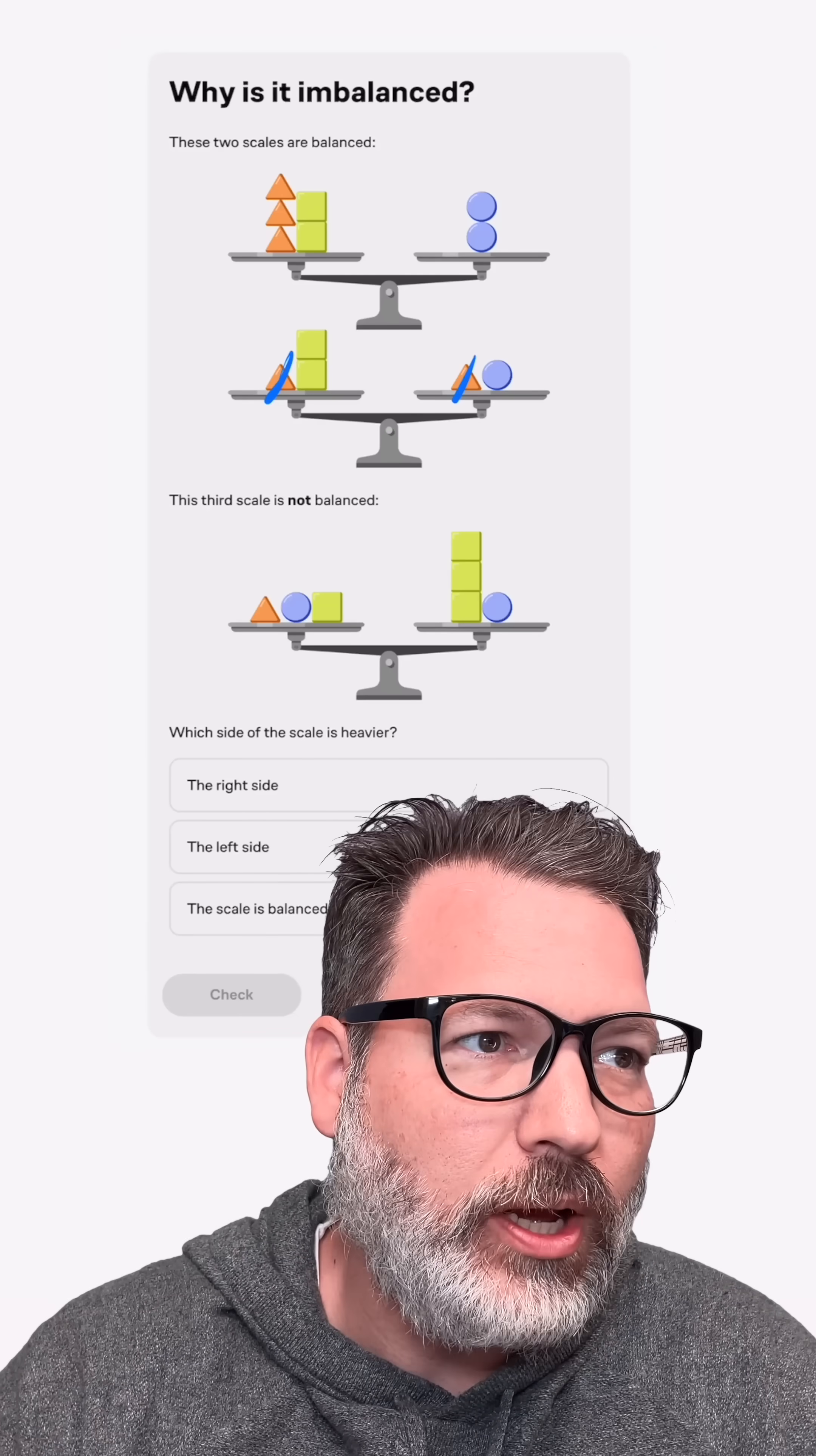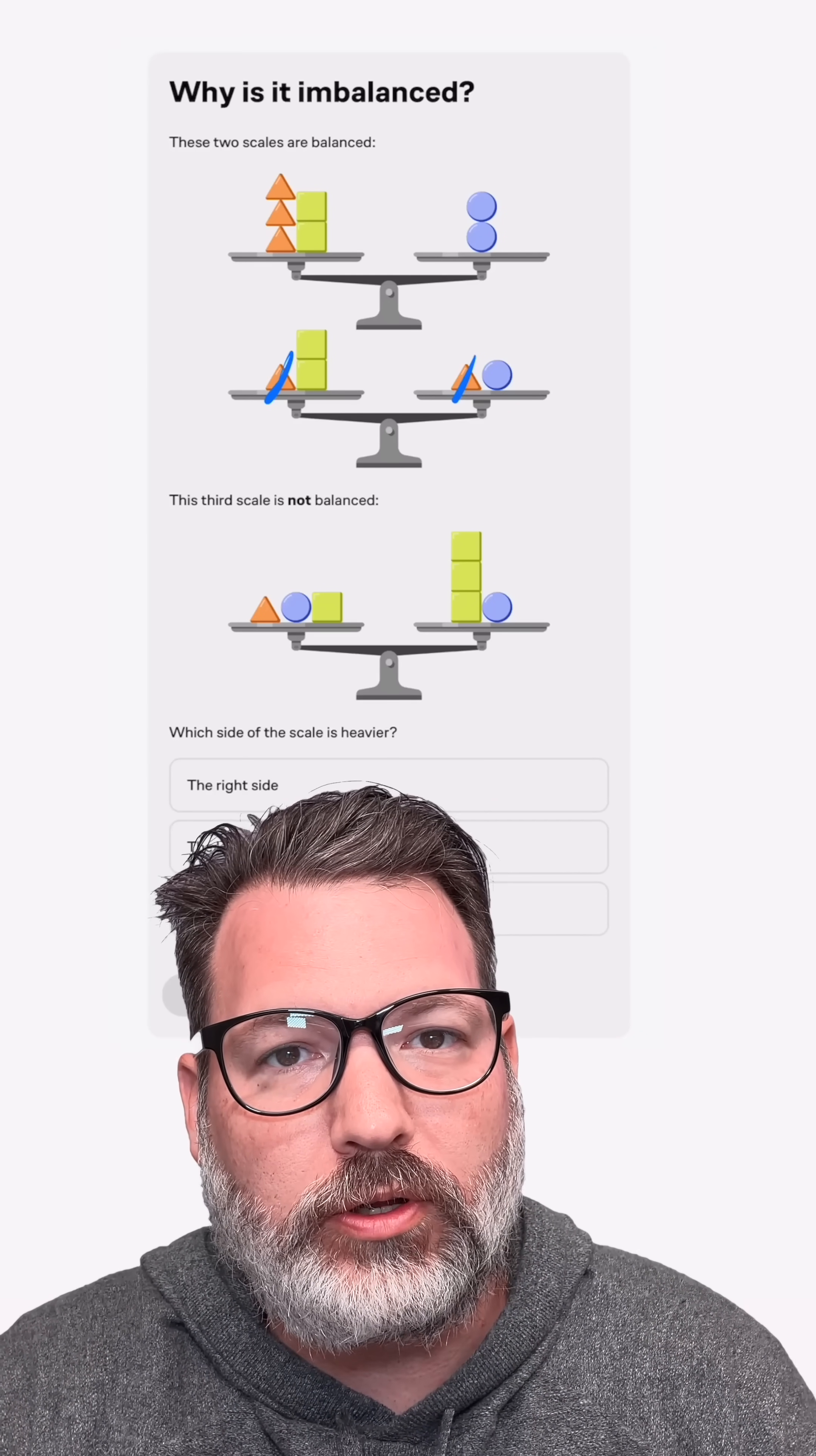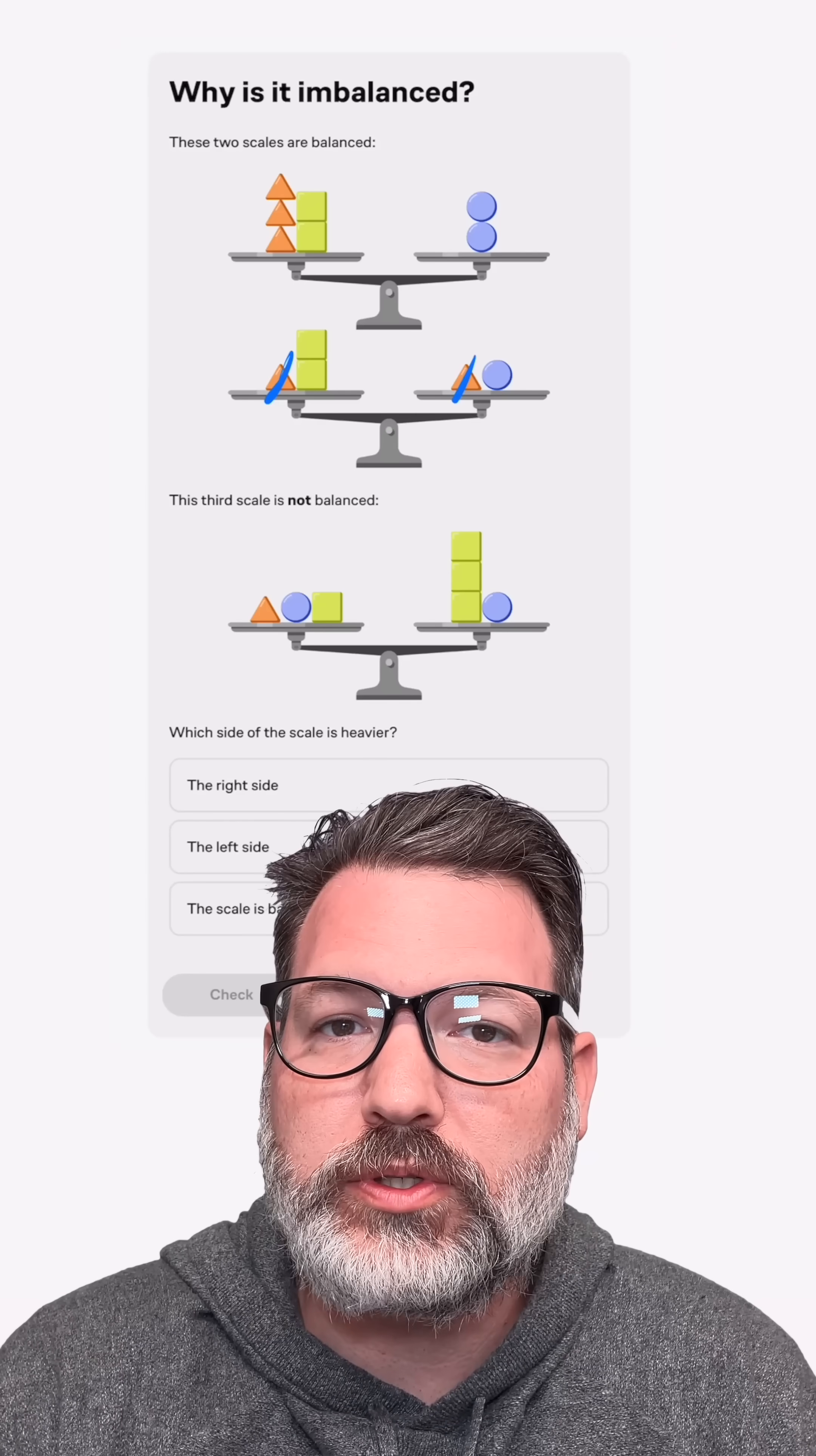It must be the case that they match up with each other already, so really, I'm just looking at a situation where a single circle on the right balances with two squares on the left.